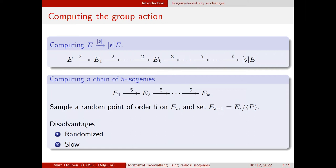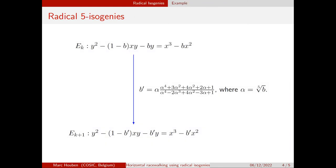So the dream would be that instead of having to sample a random point every time, there would just be some kind of formula depending on the coefficients of the curve that just always gives you the next curve in the sequence. And that's exactly what radical isogenies does.